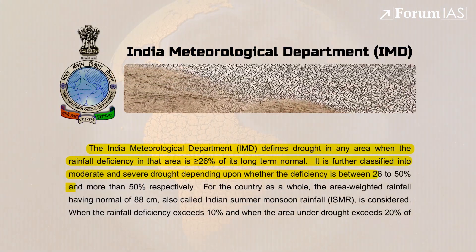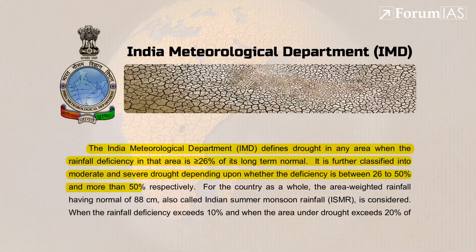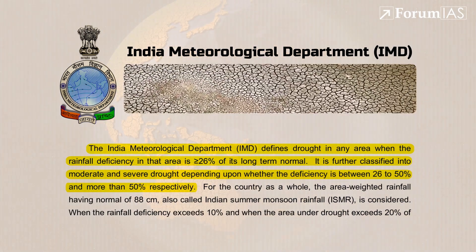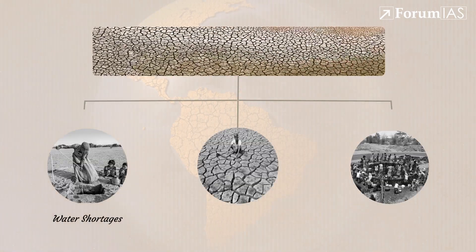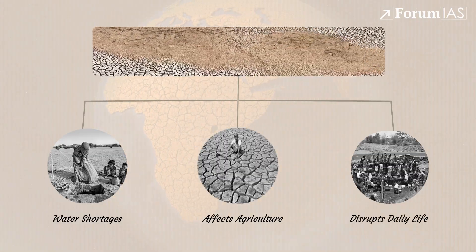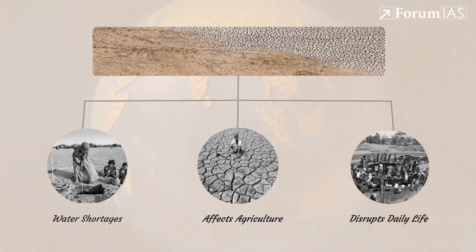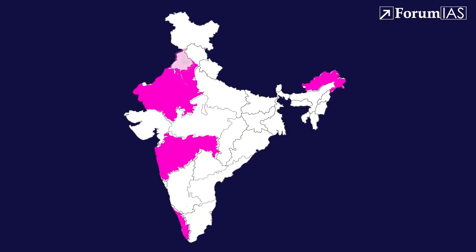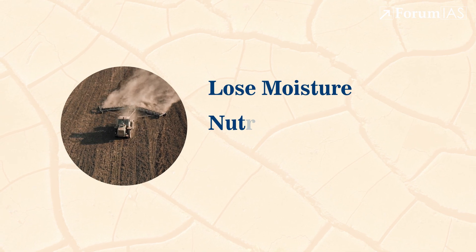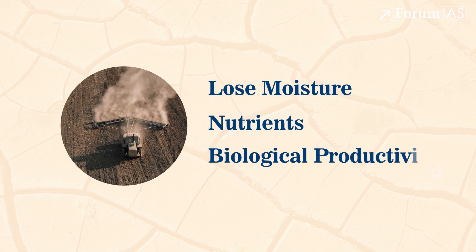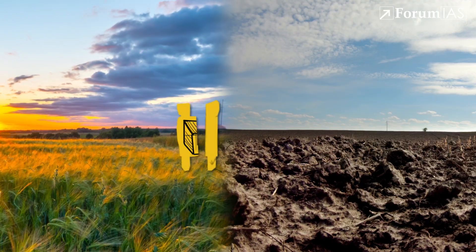This deficiency is further categorized into moderate drought (26 to 50 percent) and severe drought (more than 50 percent). It leads to water shortages, affects agriculture, and disrupts daily life, especially in regions dependent on monsoon patterns. Desertification, on the other hand, is a form of land degradation — it happens when dry lands lose moisture, nutrients, and biological productivity, eventually turning fertile land into barren areas.